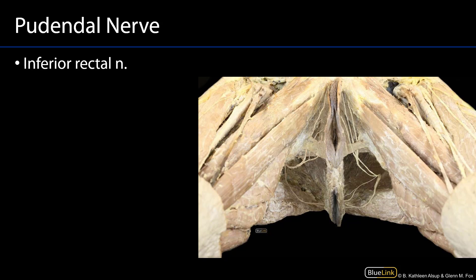Here is a view of the perineum in lithotomy position. This is the vestibule of the vagina with the labia minora; here is the anal canal with the external anal sphincter; and here is the pudendal canal. We have the pudendal nerve and some of its branches — the inferior rectal branches off in the pudendal canal to serve the external anal sphincter.